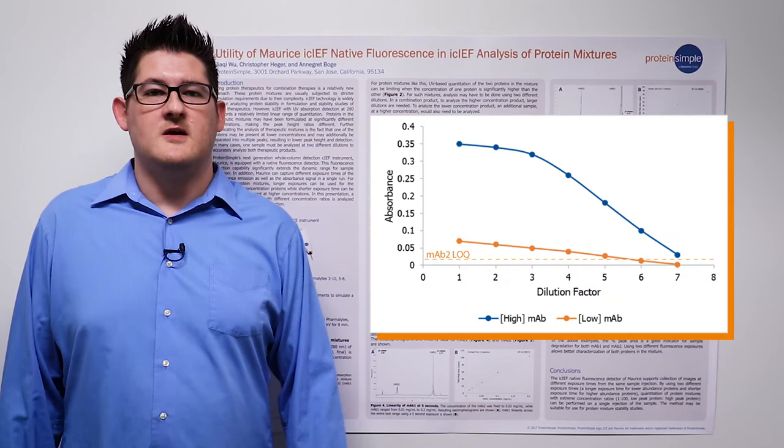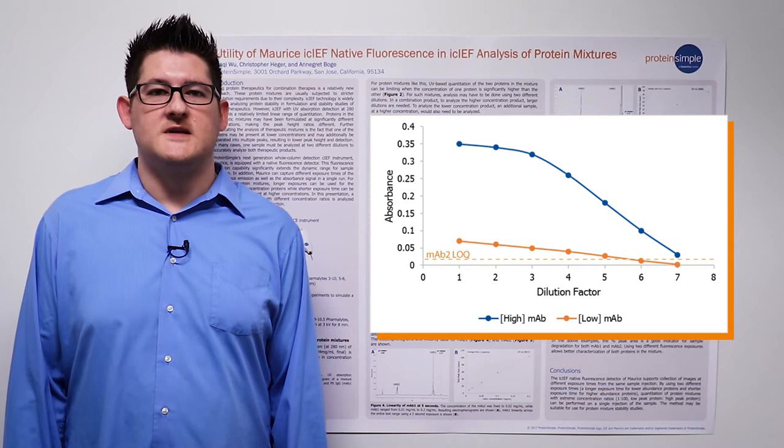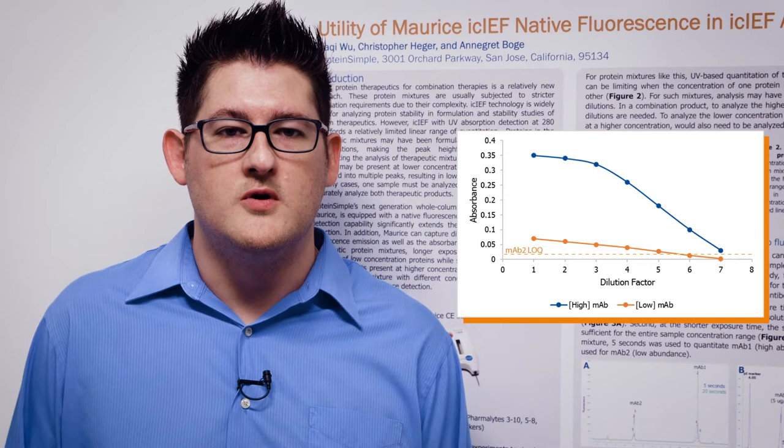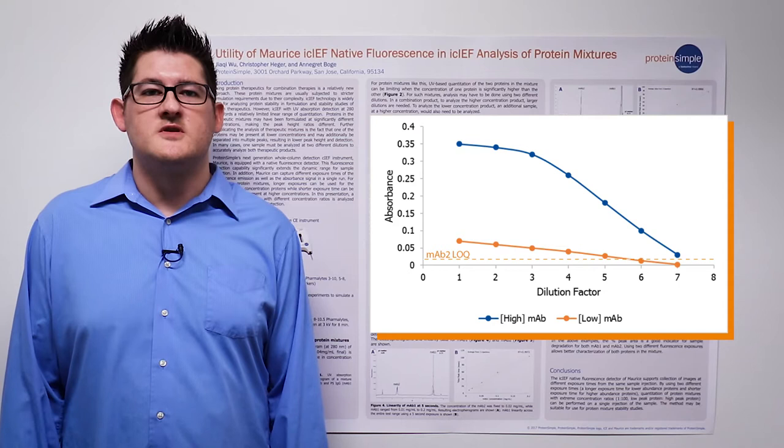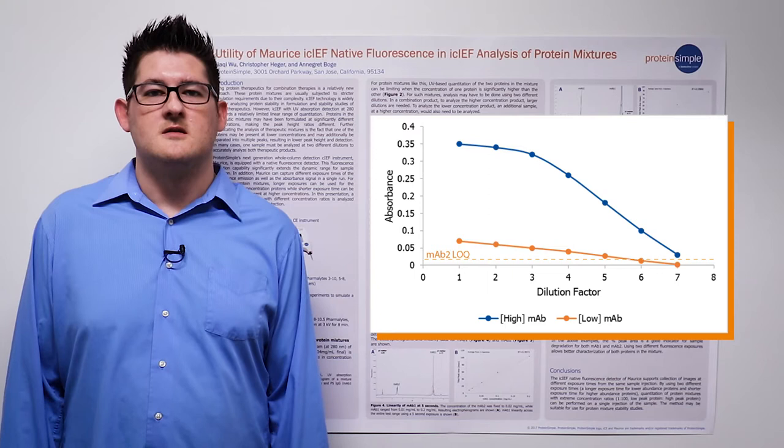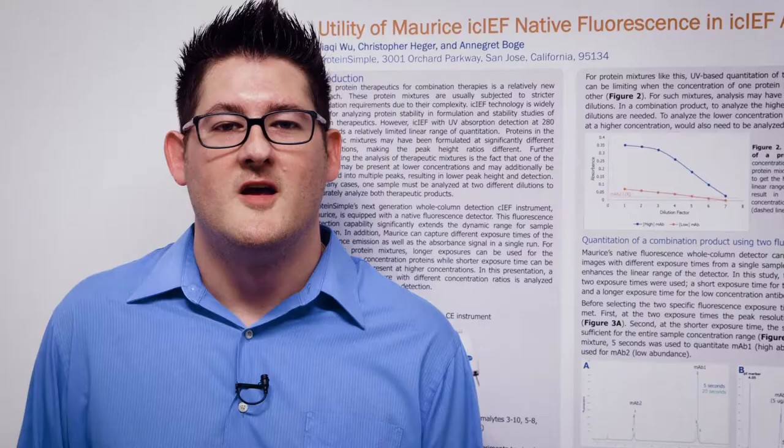In Figure 2, we show a theoretical UV absorbance dilution response for a protein mixture. In order to accurately quantitate both proteins in the sample, the sample will need to be diluted. The monoclonal antibody 1, shown in blue, needs to be diluted to get into the linear range of detection. At the same time, a similar dilution may cause the second antibody, shown in orange, to be below the limit of quantitation, represented by the orange dashed line.